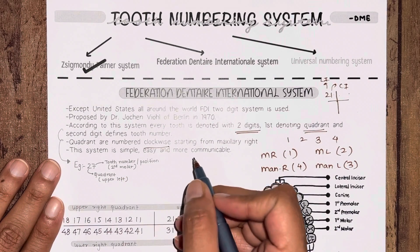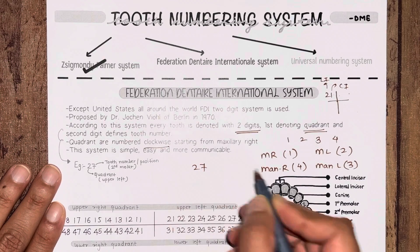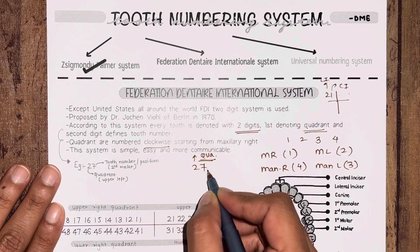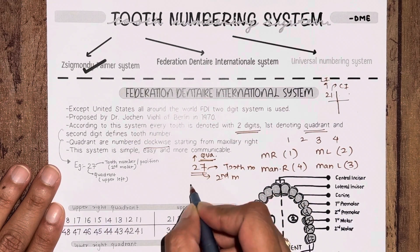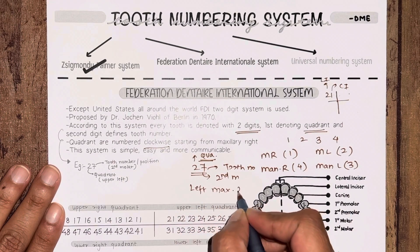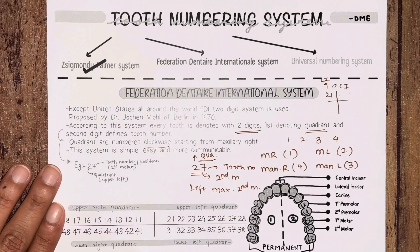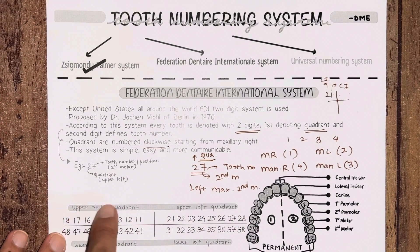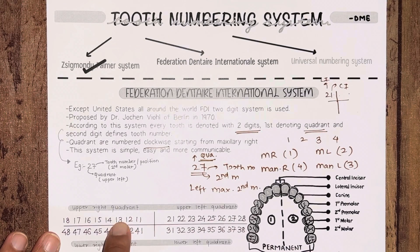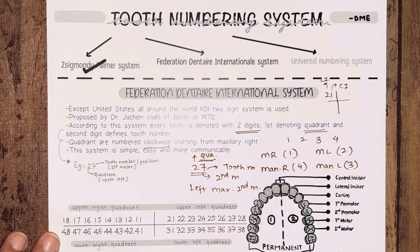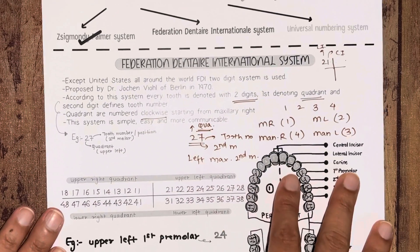This system is simple, easy, and more communicable. For example, if you write '27', two is the quadrant and seven is the tooth number — that is your second molar — so this is the left sided maxillary second molar. The first quadrant is your upper right, second is upper left, third is lower left, and fourth is lower right. Within each quadrant: one is central incisor, two is lateral incisor, three is canine, four is first premolar, five is second premolar, six is first molar, seven is second molar, and eight is the third molar.